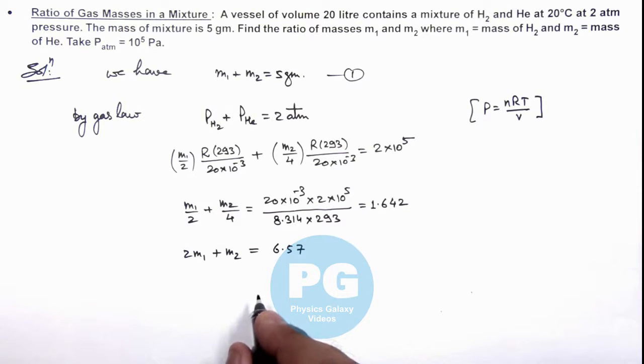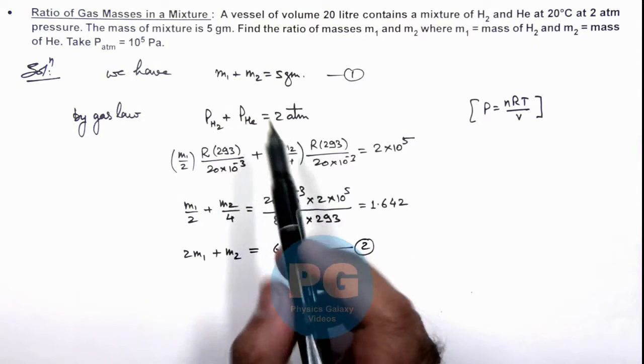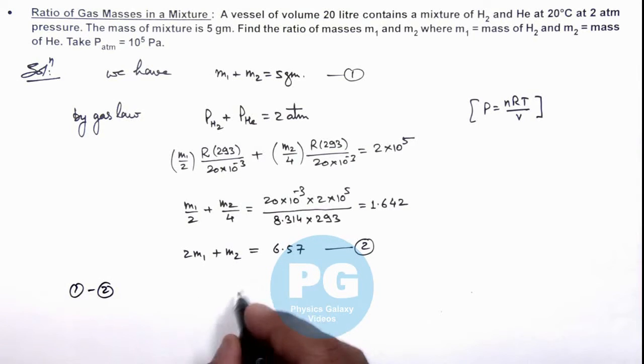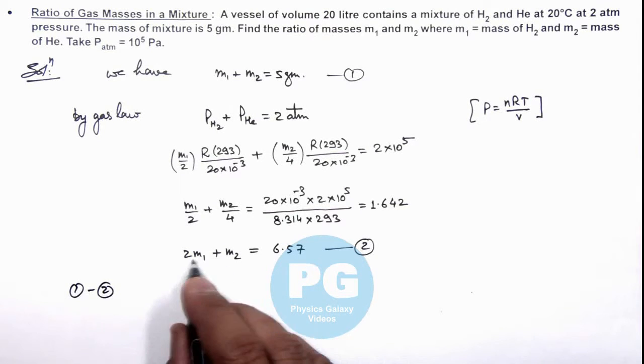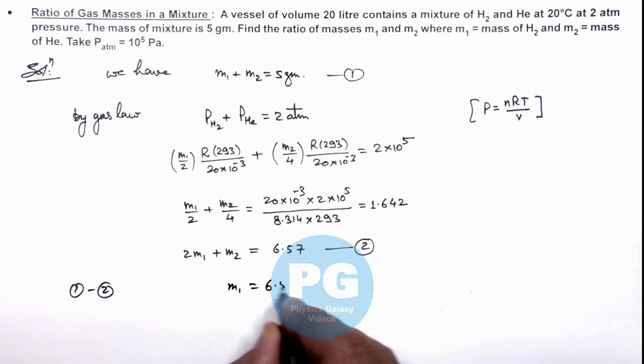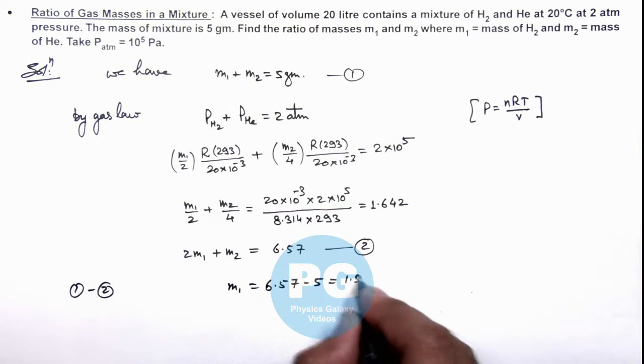If we calculate the value of m1 and m2 from equations, we can subtract these 2 values. So 1 minus 2 will give us 2m1 minus m1 is m1, is equal to 6.57 minus 5 that is 1.57 gram.